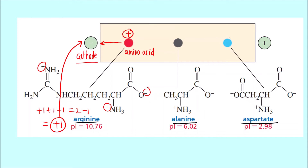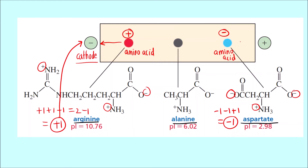Now the blue spot — that is aspartate — has charges of −1, −1, and +1, giving an overall charge of −1. Since aspartate is negatively charged, it has moved closer to the positively charged electrode, that is the anode.